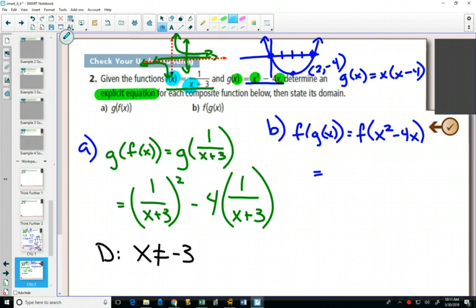So in b, f of g of x, we know that g of x is x squared minus 4x. And we're plugging that now into f of x. And the rule for f of x is wherever you plug in x, you do 1 over that plus 3. So this will equal 1, whoa, highlighter, 1 over this x squared minus 4x plus 3.